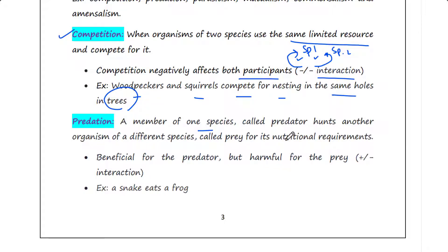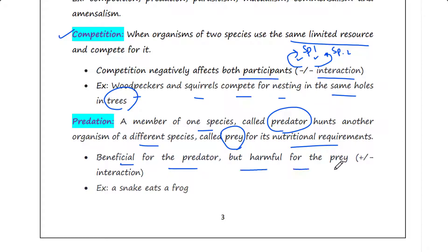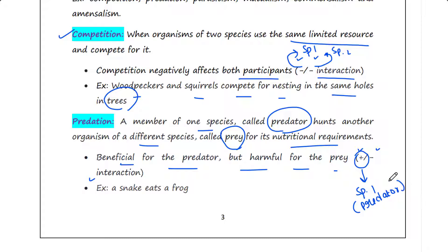In predation, a member of one species called the predator hunts another organism of a different species called the prey for its nutritional requirements. This interaction is beneficial for the predator but harmful for the prey, hence it is denoted as a plus-minus interaction. Plus is for species one, the predator, which is getting benefited.